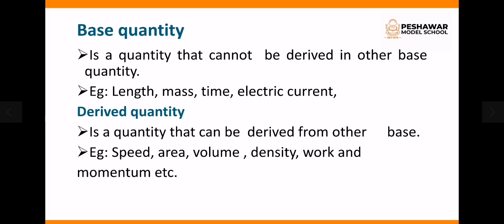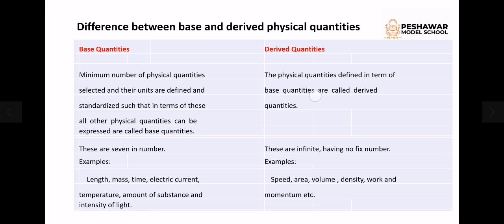Derived quantities are those quantities which are derived from the base quantities, like speed, area, volume, density, work, and momentum. The units derived from base units are called derived units, and the quantities derived from base quantities are called derived quantities.